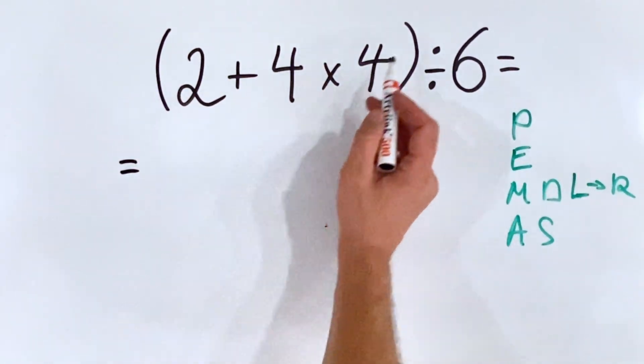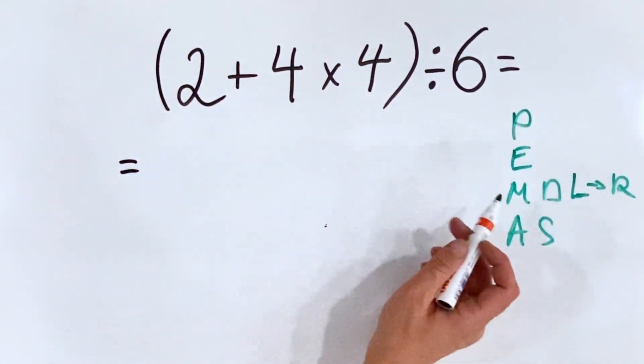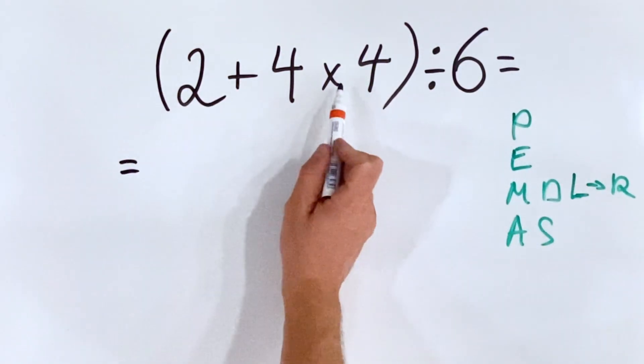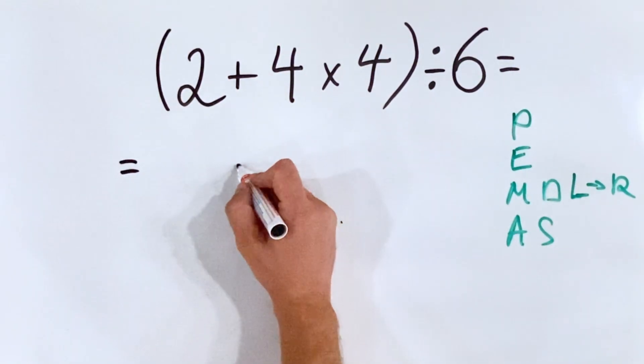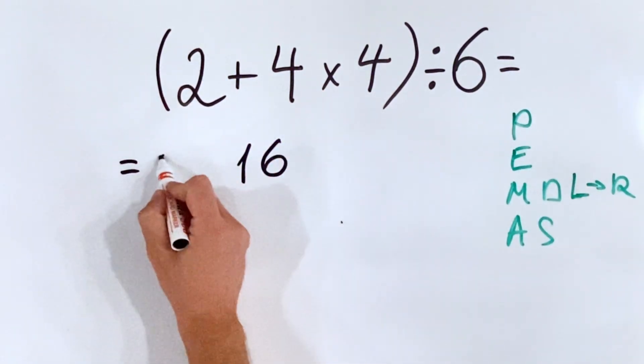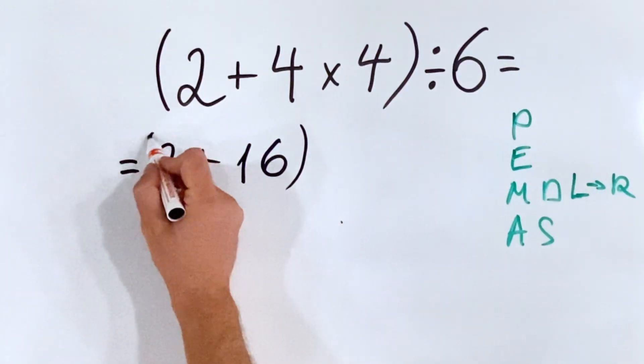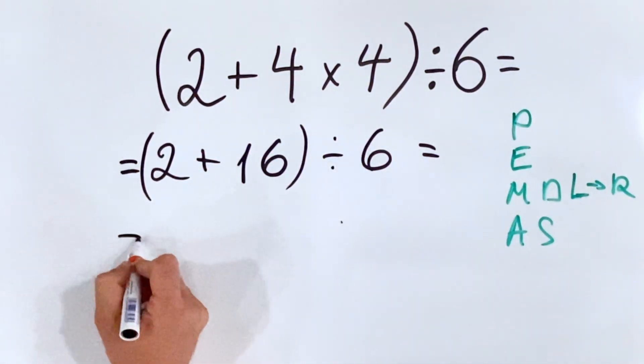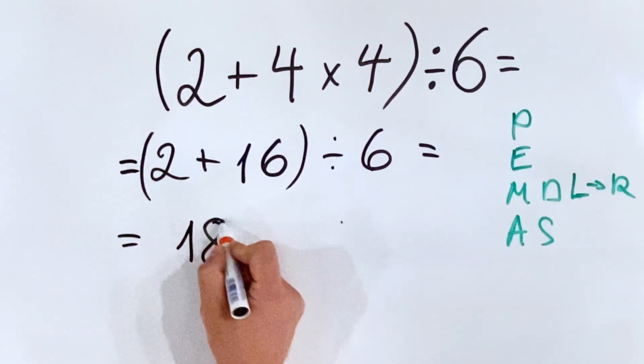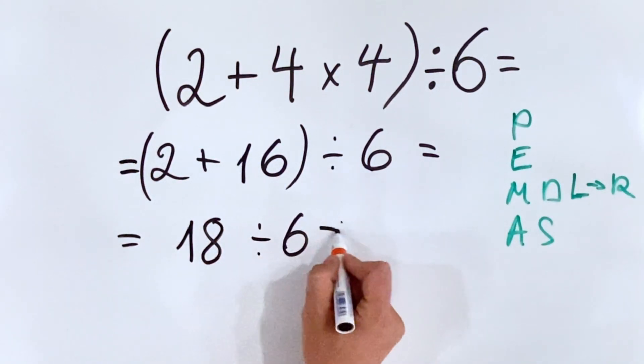So four multiplied by four is 16. Two plus 16 divided by six, so we get 18 divided by six, which equals three.